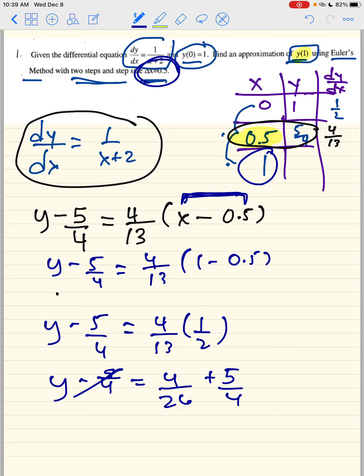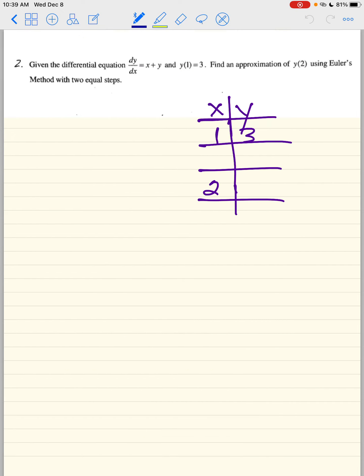Then what we do here is now we just plug in to approximate for 1. So y minus 5 fourths equals 4 over 13 times 1 minus 0.5. So this here is going to be y minus 5 fourths equals 4 over 13 times 1 half. Now what you'll notice is every single time the distance or the difference will always be 0.5. So we're almost done. So again, y equals 5 fourths plus 4 over 26. Then you add 5 fourths to the other side. And then you just have to combine fractions and that's your approximation. You actually have to figure those out. These numbers, I'm sorry, are not the greatest, but that's how you do the problem. Let's try another one.